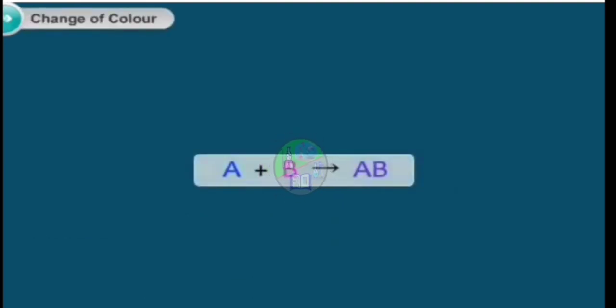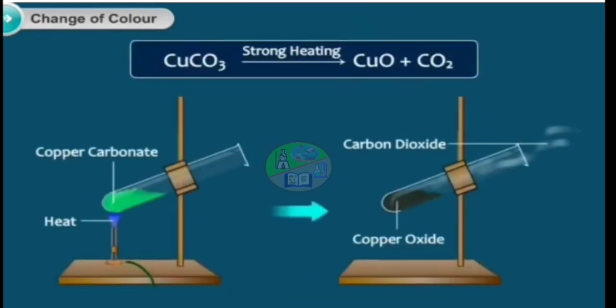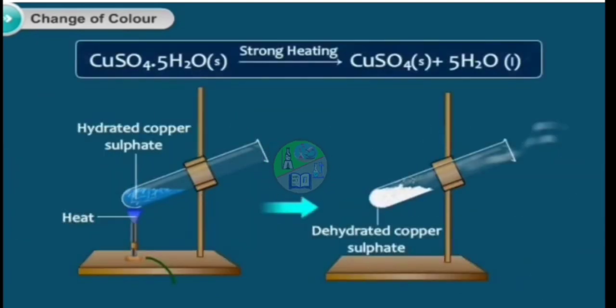Certain chemical reactions are accompanied with the change in color of the products. When green colored crystals of copper carbonate are heated strongly, it forms a black compound of copper oxide, giving off carbon dioxide gas.